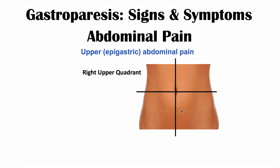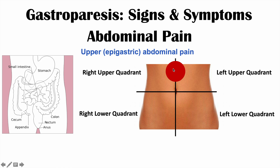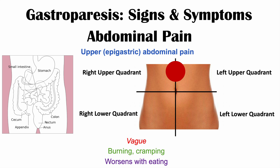Looking directly at a patient, this is the right upper quadrant, right lower quadrant, left upper quadrant, and left lower quadrant. The pain that individuals feel in gastroparesis occurs in the upper or epigastric area. Looking at the stomach diagram, this makes sense because your stomach sits in this area — kind of on the left side, but you can feel it in this region. If there's food just sitting there and not digesting properly, this can cause pain. Oftentimes it feels vague, with a burning or cramping sensation, and it oftentimes worsens with eating. Individuals will also have feelings of indigestion.